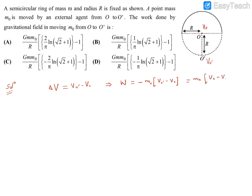So basically we need to find V_O and V_O dash. This question is about finding the gravitational potential at the center of curvature of the semi-circular ring, as well as at point O dash. For point O, the potential at any point is given by minus G dm divided by r. Since O is the center of curvature, the distance to every element is uniformly capital R, so the potential at O is minus GM over R.